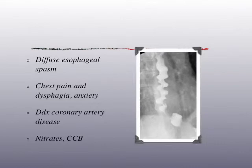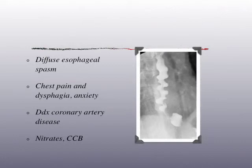Diffuse esophageal spasm is treated with the same drugs used for coronary artery disease: nitrates and calcium channel blockers. It is a fairly benign disease that rarely causes major complications but disturbs patients quite a bit. Reassurance, nitrates, and calcium channel blockers is the treatment approach. You could do manometry — endoscopic evaluation is generally normal, at best showing some reflux. Manometry is not pathognomonic for DES, but since it's a benign condition, most patients are managed with nitrates and reassurance.